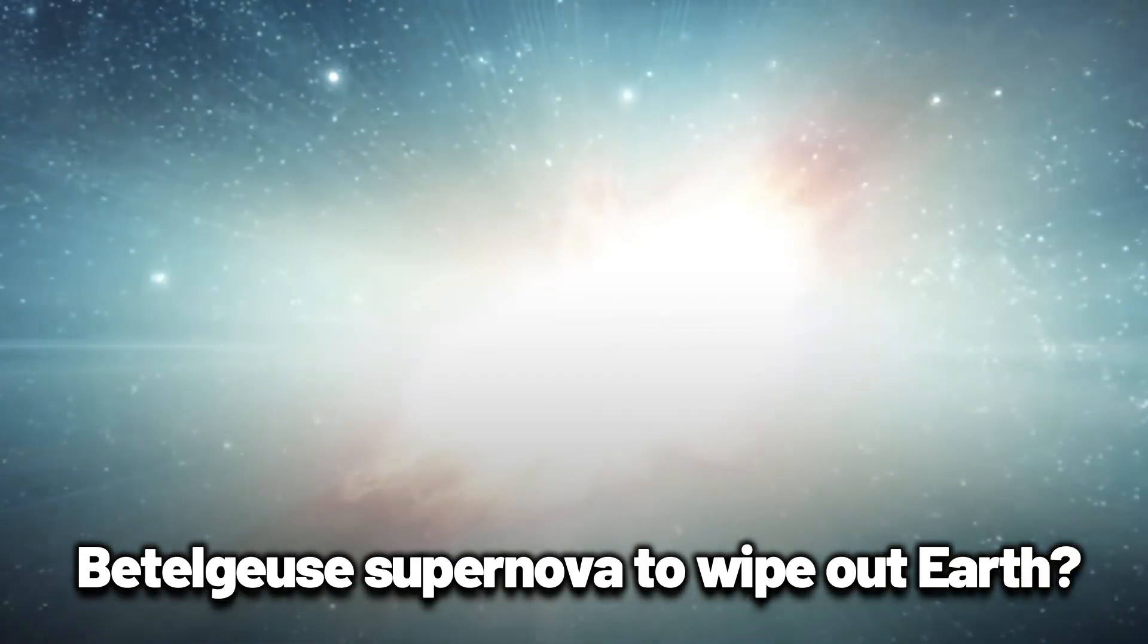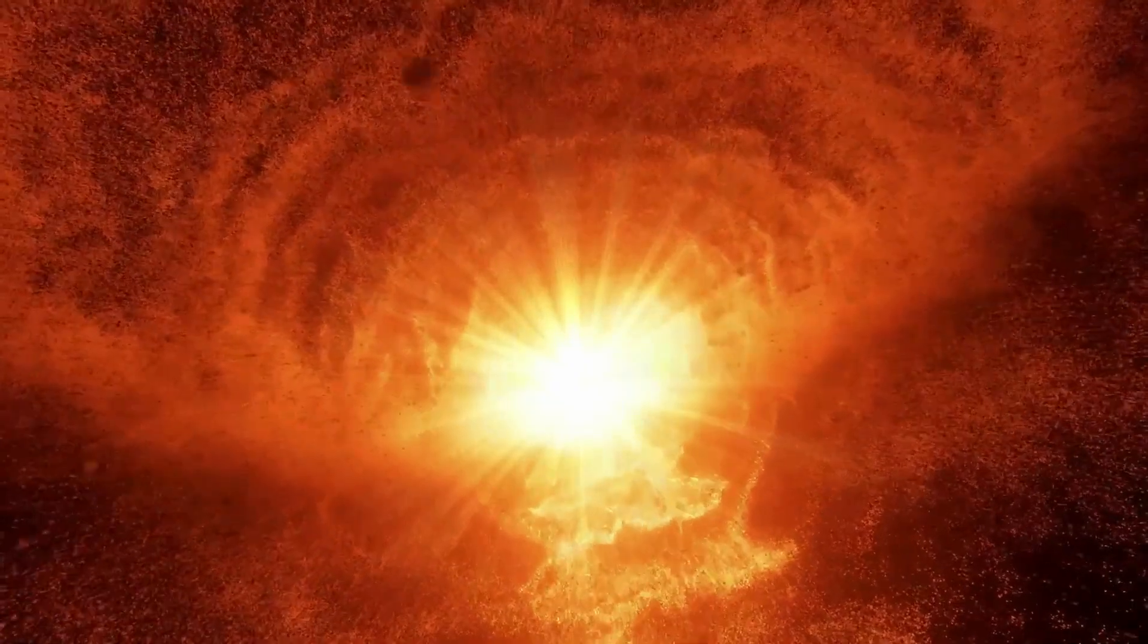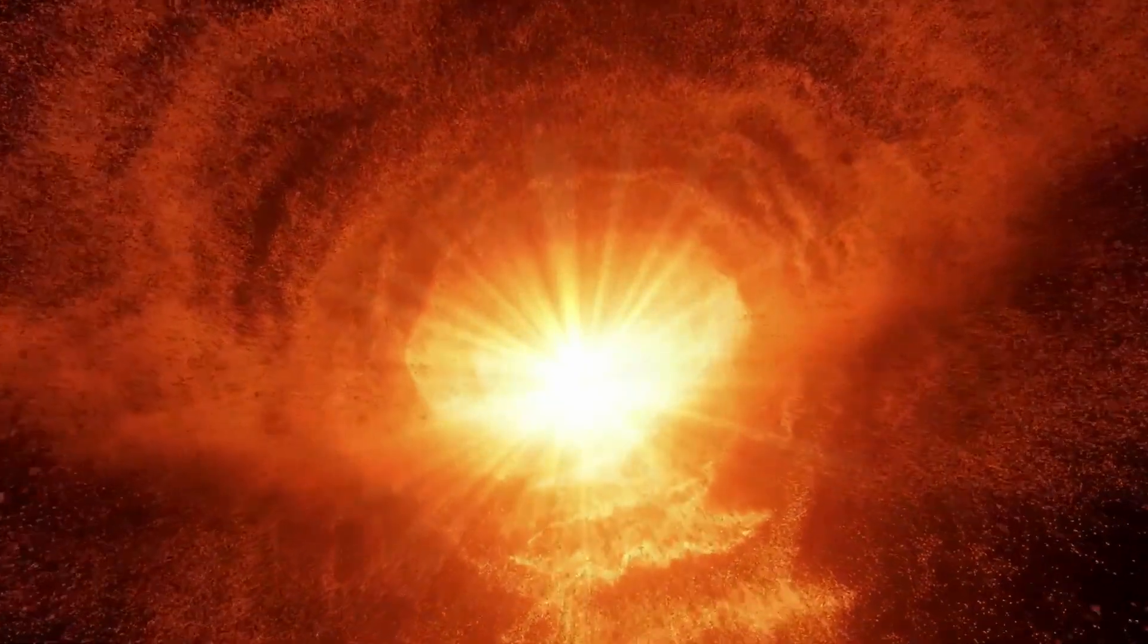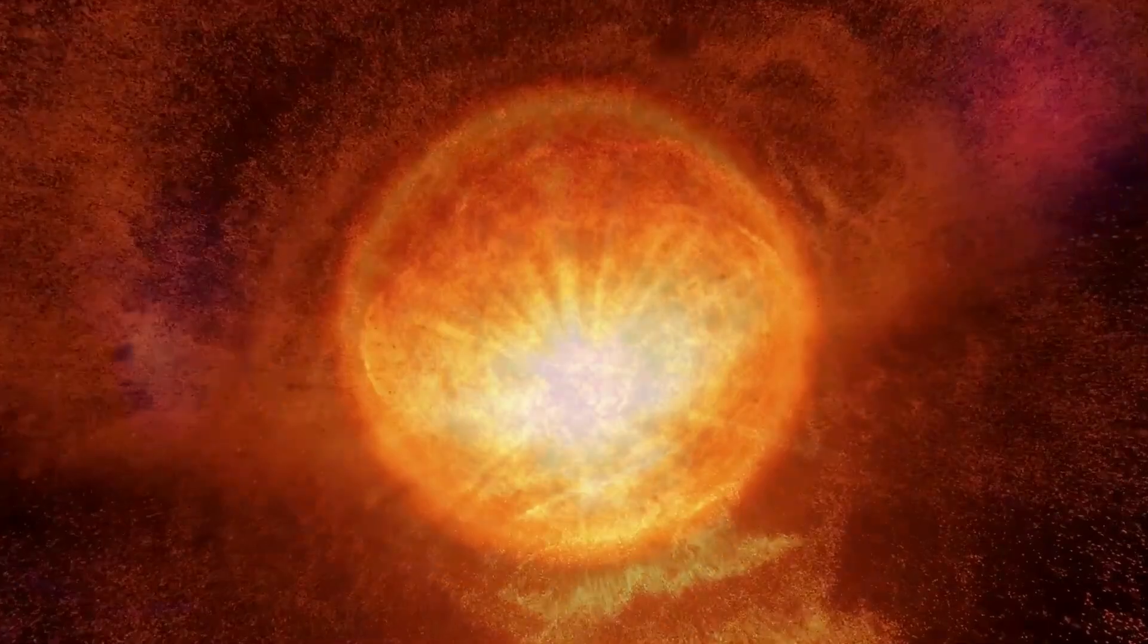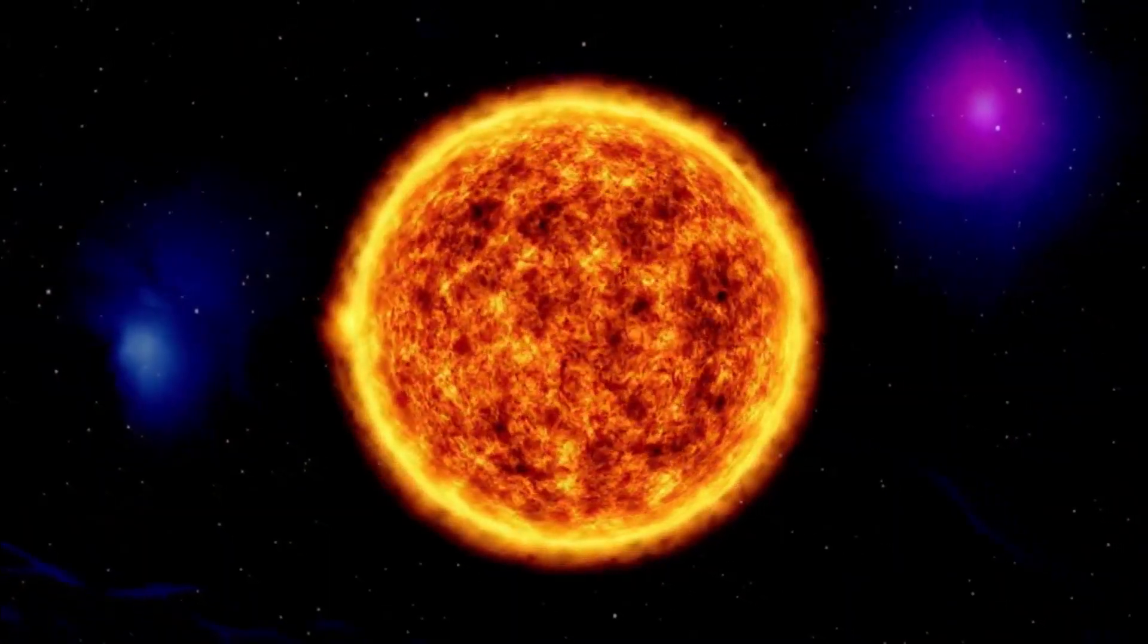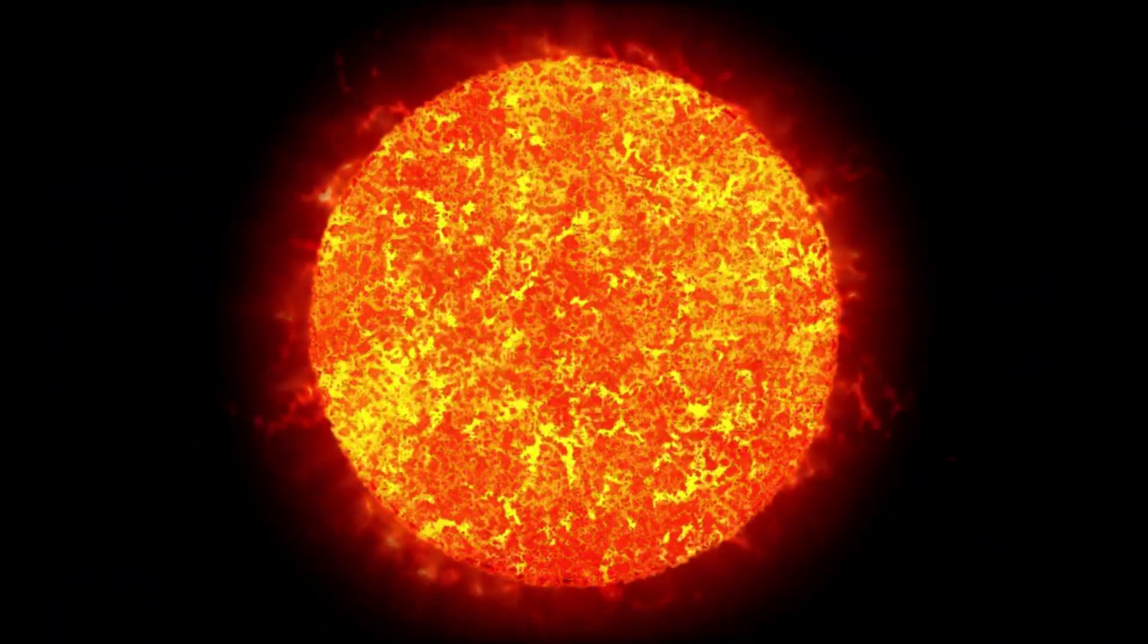Is it possible for a Betelgeuse supernova to wipe out Earth? When the star goes supernova, it will overtake the sun as the brightest celestial object in the sky. Betelgeuse will be visible during the day and will shine brighter than a full moon, although being more than 724 light-years away from Earth.